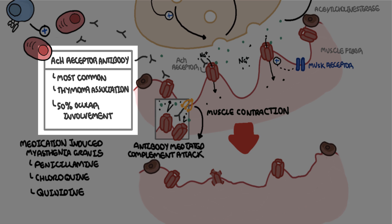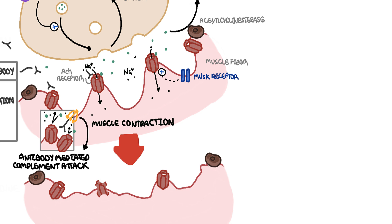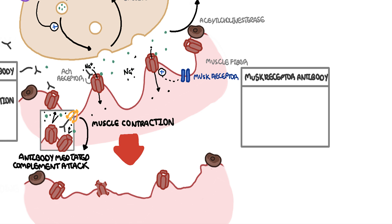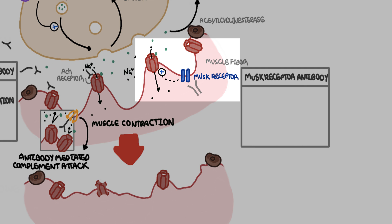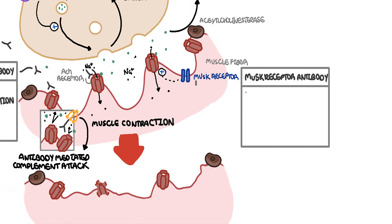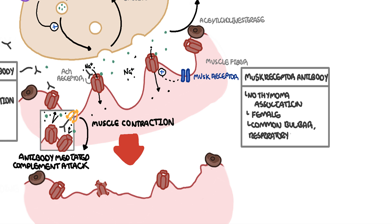Some patients with myasthenia gravis who are seronegative for acetylcholine receptor antibodies — meaning they don't have AChR antibodies — have antibodies directed against another target on the surface of the muscle membrane: the muscle-specific receptor tyrosine kinase, or MuSK. MuSK receptor antibodies attack the MuSK receptor and therefore reduce acetylcholine receptor expression. MuSK receptor antibodies have no thymoma association, are more common in females, and bulbar and ocular involvement is common.